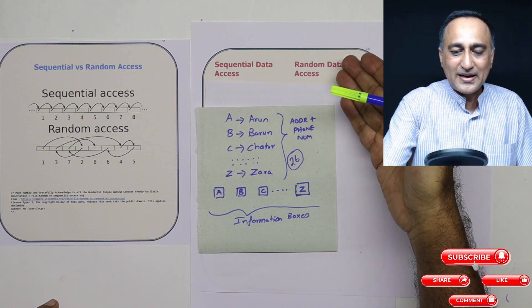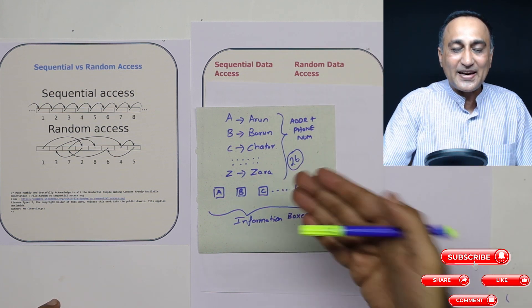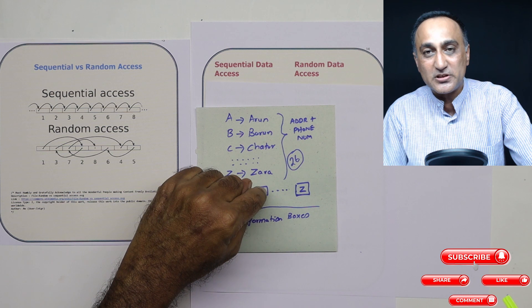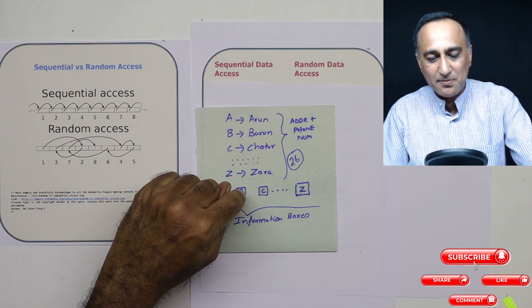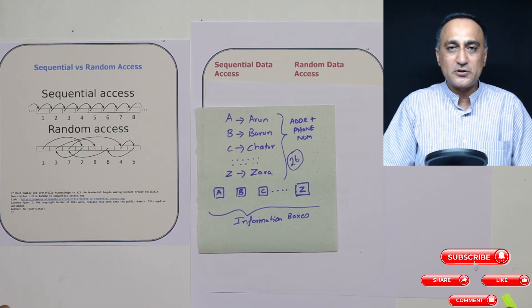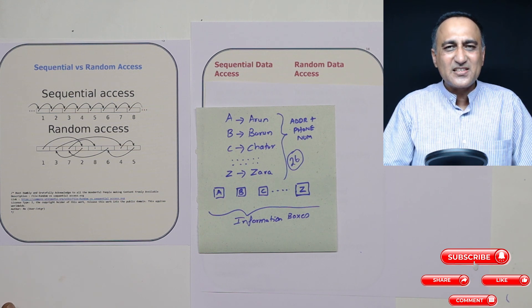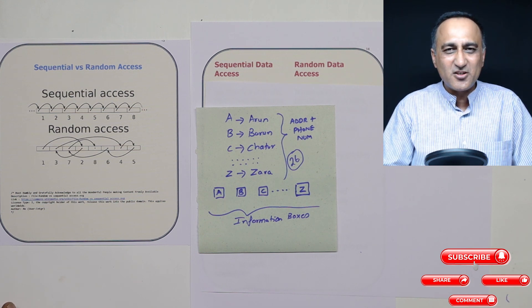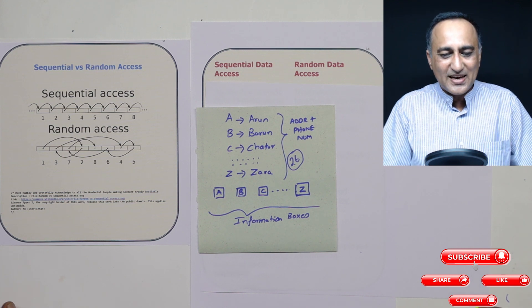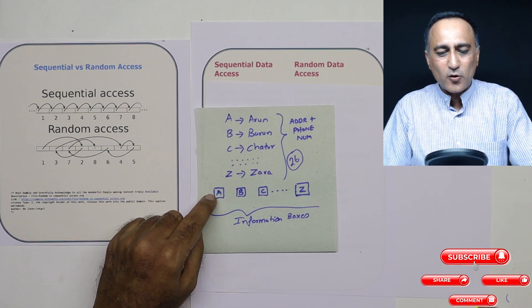This is an example of random or systematic data access because I could go straight away to C without having to check A and B and all those fellows. But now let's say what I do is I get somebody who's not very interested to work with me.